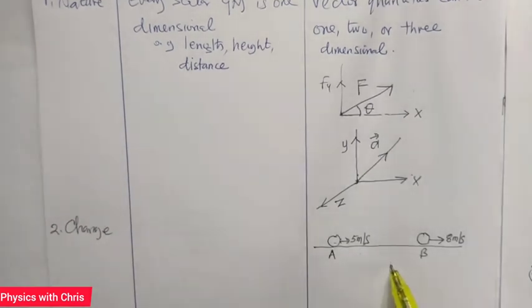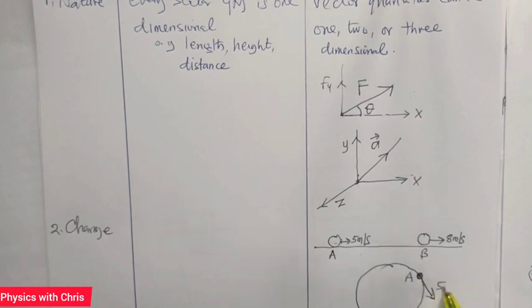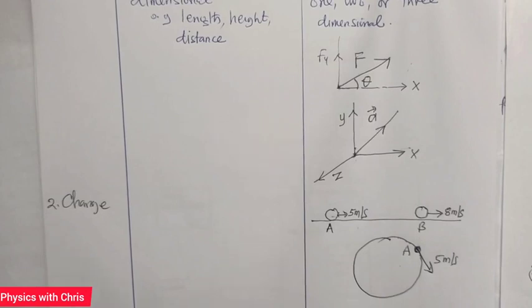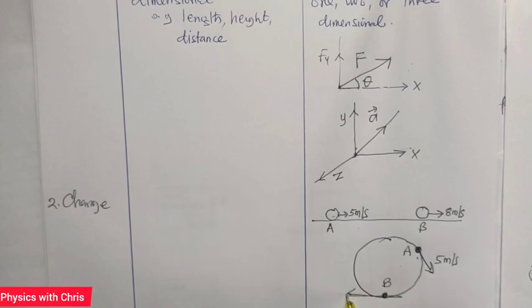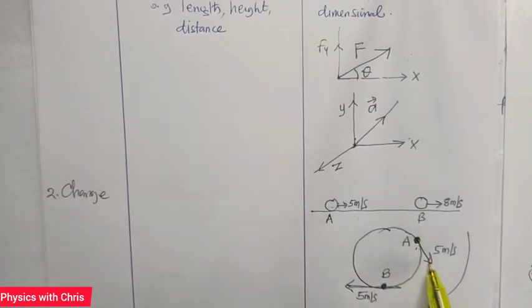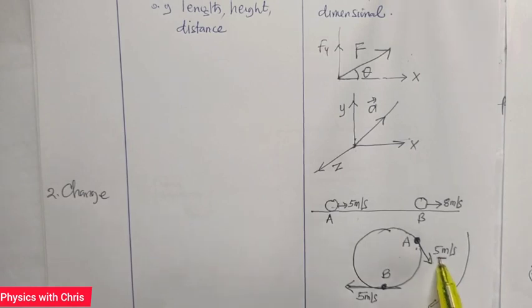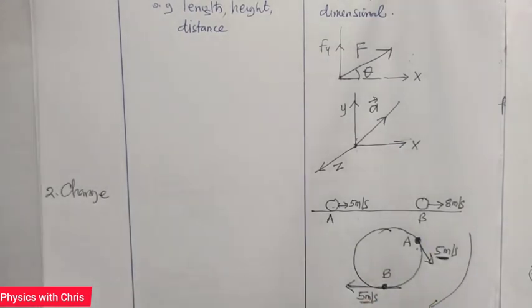When a body moves in a circle, the direction at any time is along the tangent. If the body is at point A moving at five meters per second and later at point B, the direction of motion along the tangent at B is different from at A. Even though the speed is kept constant at five meters per second, the direction is changing — so the velocity vector is changing, though the magnitude is constant.